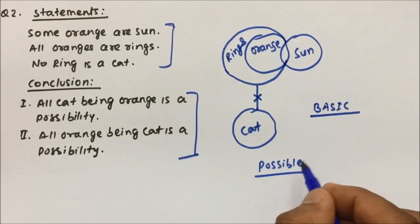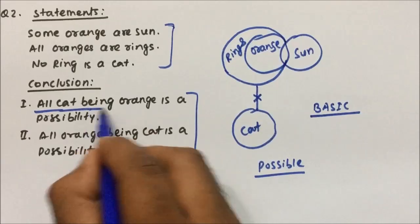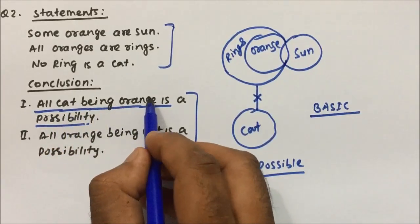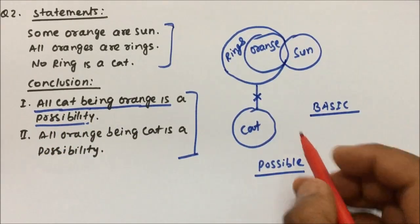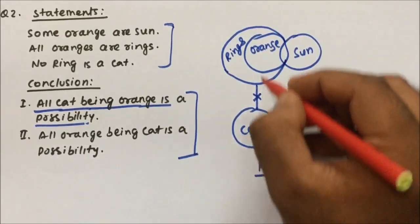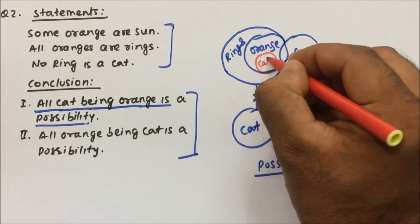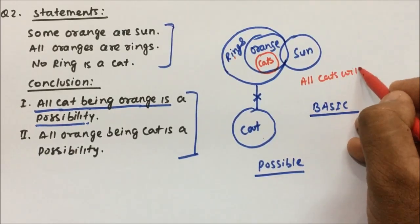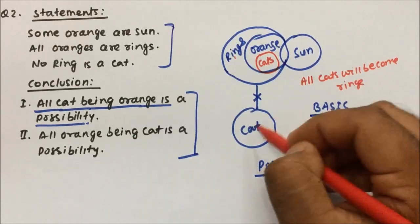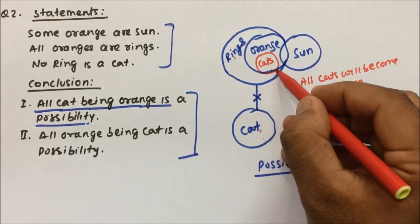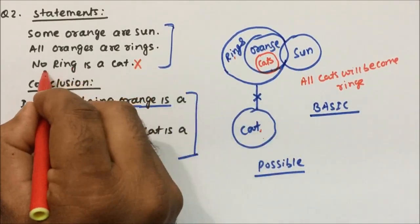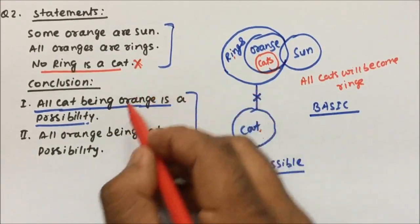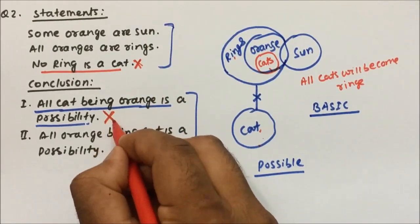Conclusion one: 'all cat being orange is a possibility' — is there any possibility that all cats will be orange? We try to bring all cats inside the orange. When we do that, all cats will also become rings. But statement three clearly says no ring is a cat — so bringing cats inside orange violates statement three. That means conclusion one is false, because drawing it violates the given statements.